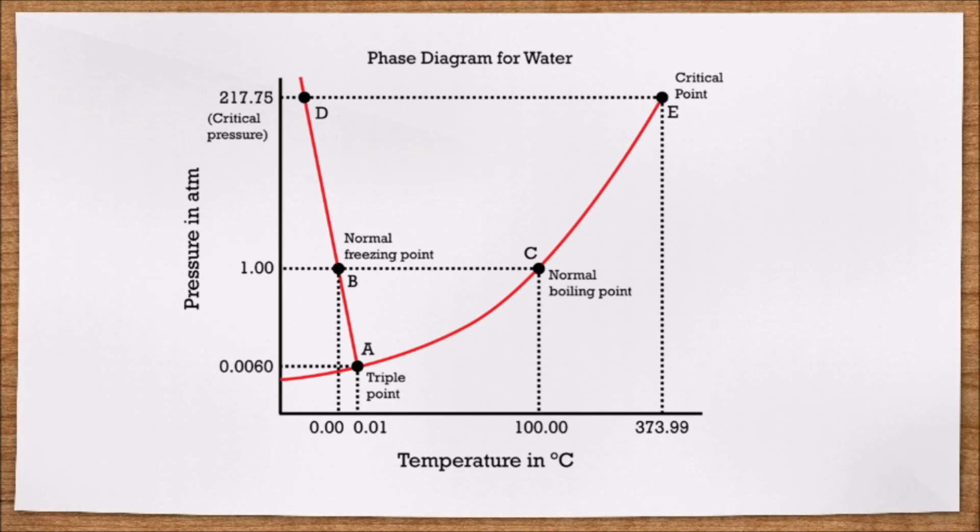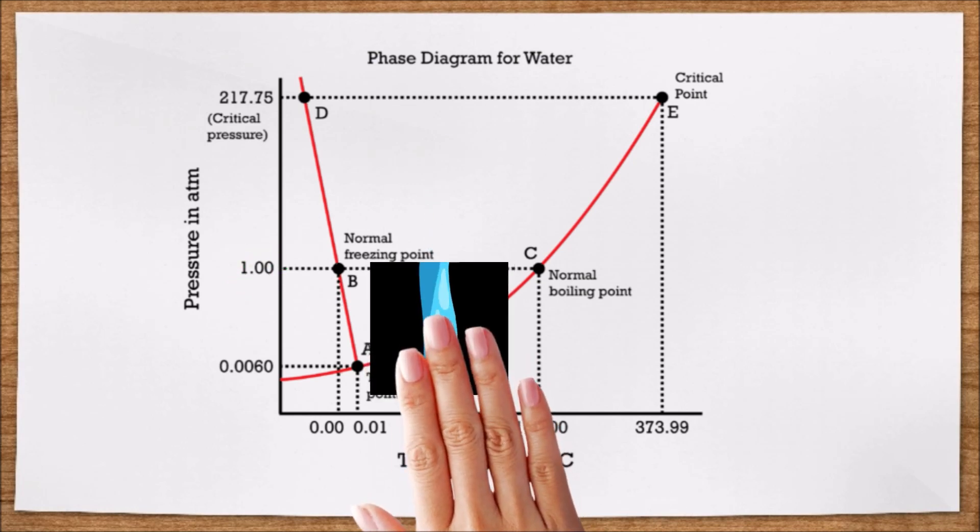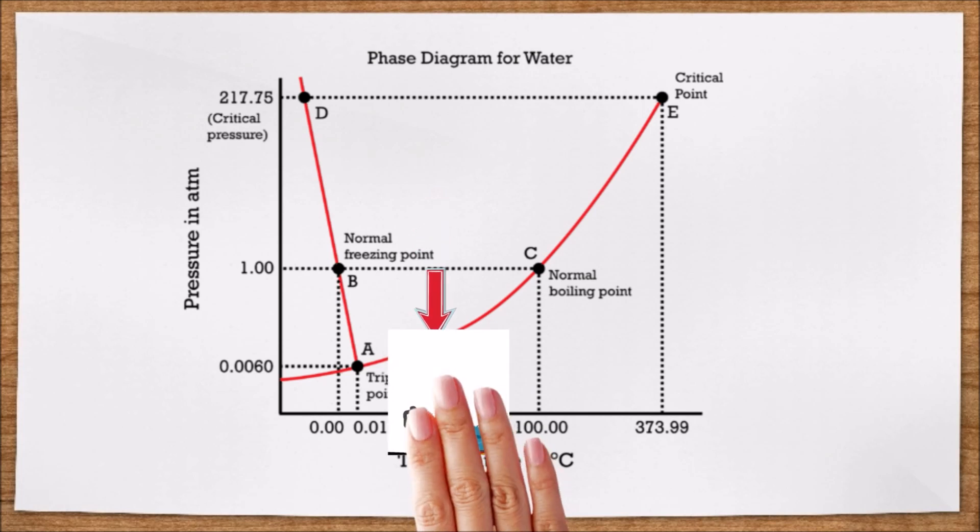Let's look for example what happens at 50 degrees Celsius keeping the pressure at 1 atmosphere. At that point, water remains liquid. But if we decrease the pressure, the water will eventually pass to the vapor phase.